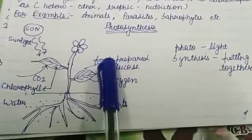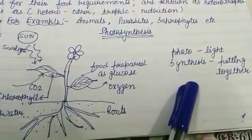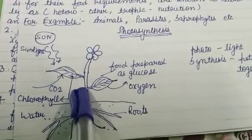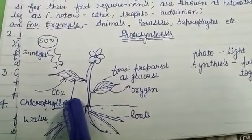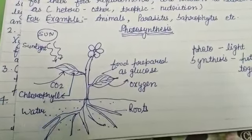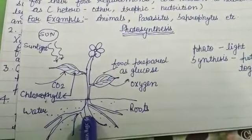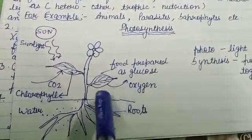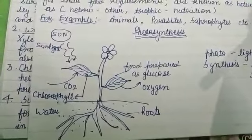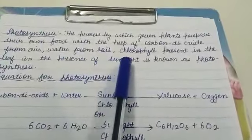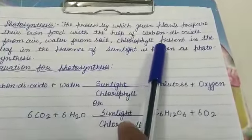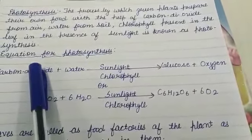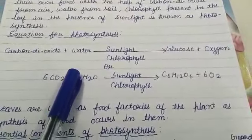Now, photosynthesis — 'photo' means light and 'synthesis' means putting together. As you can see in this diagram, sunlight falls on the leaf, carbon dioxide enters from the atmosphere, chlorophyll is already present in the leaf, and water from the soil is taken up through the roots. Food is prepared in the leaf as glucose, stored as starch, and oxygen is released as a byproduct. Photosynthesis is the process by which green plants prepare their own food with carbon dioxide, water, chlorophyll, and sunlight.